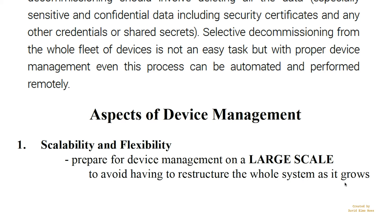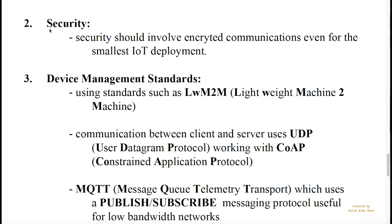Those design details should be taken into account as you're first setting up your system. The most important aspect of any deployment is security. Even for the smallest IoT deployment, you should have encrypted communications between the server and the device. For large-scale deployments such as smart cities where you're controlling power grids, you definitely don't want hackers taking control of those devices. Security is a very important feature that should be addressed right at the start of any deployment.